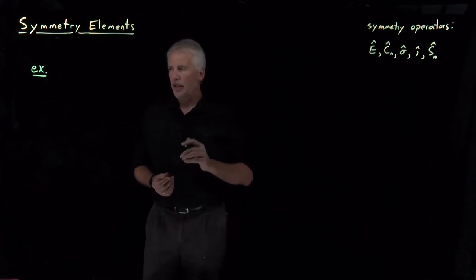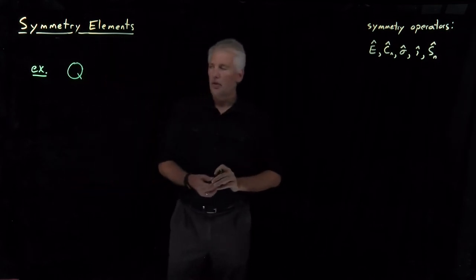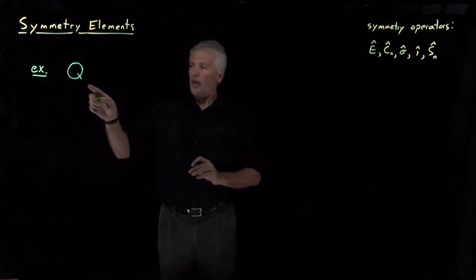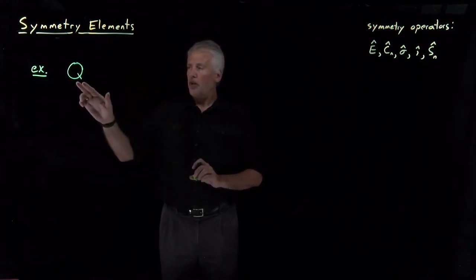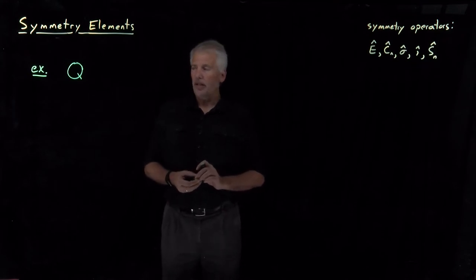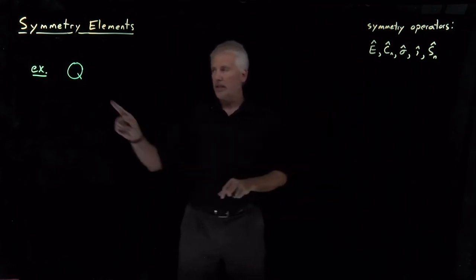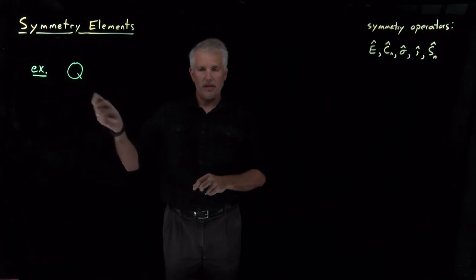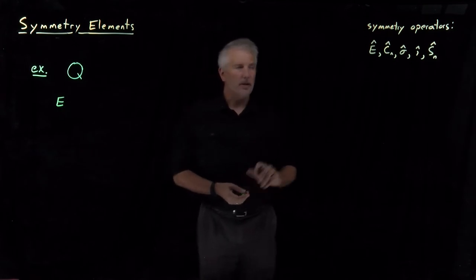Sticking with capital letters for now, let's take the example of a capital letter Q. That's not a particularly symmetric-looking letter. We can ask ourselves what are the operations that leave this letter unchanged? If I do the identity operator on Q, then I get back the same letter Q and it's not any different than it was. So certainly E is an operation that leaves the letter Q unchanged.